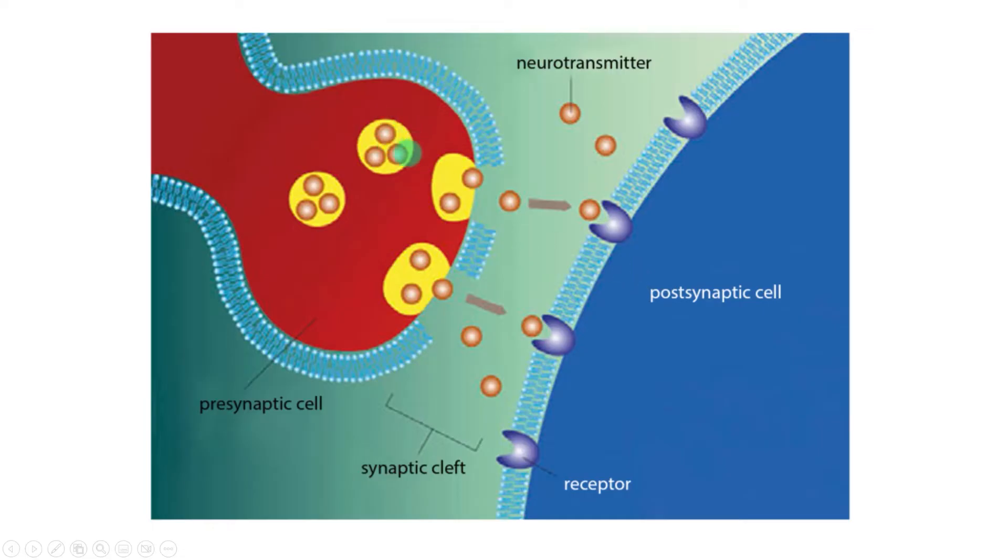we have our neurotransmitters being released from these sacs inside the presynaptic cell. They cross the gap, and they activate receptors on the postsynaptic cell, passing on whatever message they're supposed to. And if you got all that in your diagram, good job! You've communicated neurotransmission.